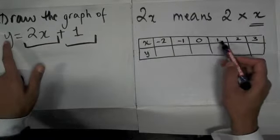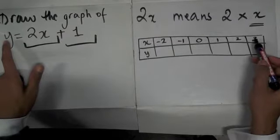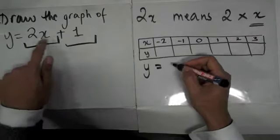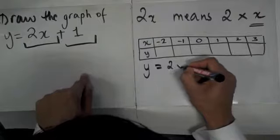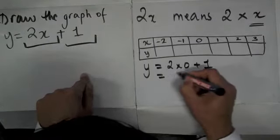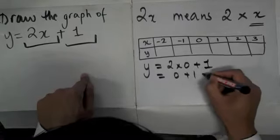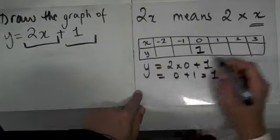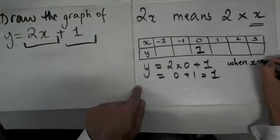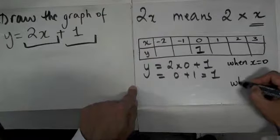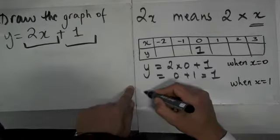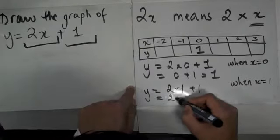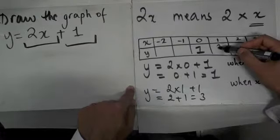My advice is you always start with 0, 1, 2 and 3, the positive numbers, and then you can sort of work out a pattern. So I'm going to do y = 2 times 0 plus 1, so that gives me 2 times 0 is 0 plus 1, that's equal to 1. If I do it for x = 1, I get y = 2 times 1 plus 1, so that's equal to 2 plus 1 which is equal to 3. So here I've got 3.